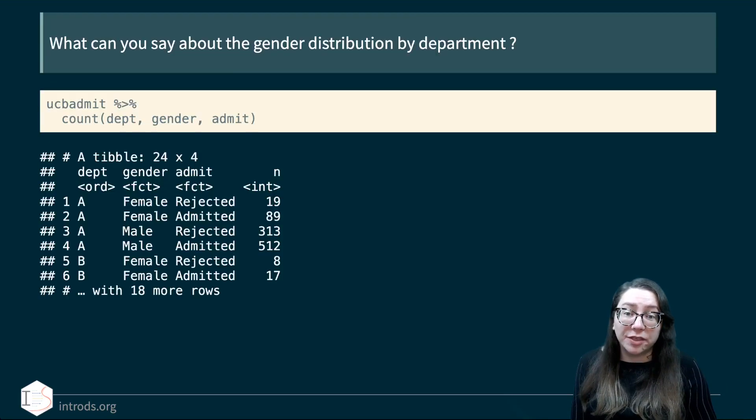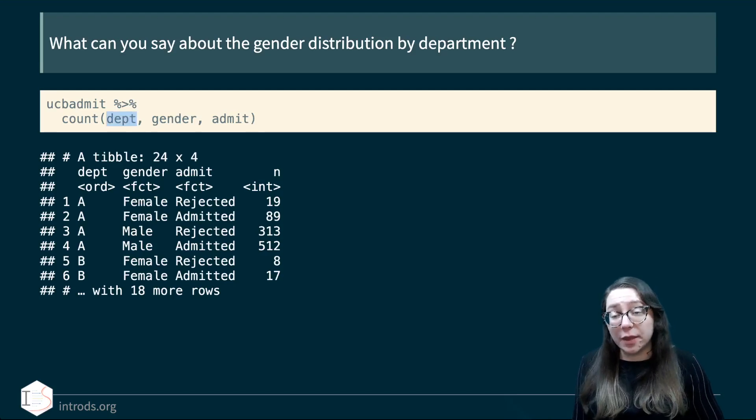So with this information in mind, let's take a look at the gender distribution by department. This time we're going to add to our count statement one more argument at the beginning, which is department. So we're saying we want to do the same thing that we did, but we want to do it once per department. It's a little bit hard to tell what we would do based on this particular output. We have some of the data we need, but not everything is showing up in one place.